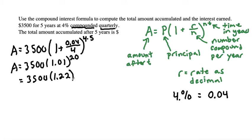Now I'll do 1.01 to the power of 20, which equals 1.22, continuing as 1.22019, but 1.22 is close enough. Multiply that by 3,500, which gives $4,270.665.